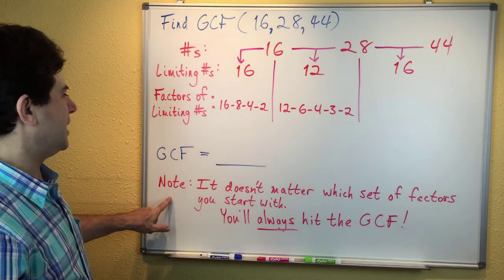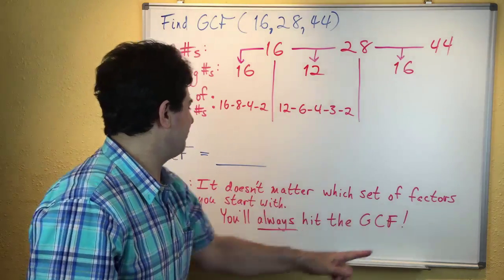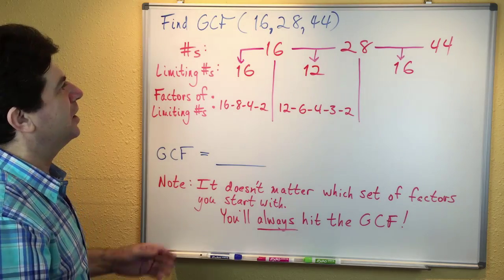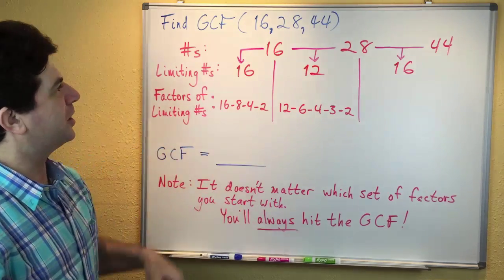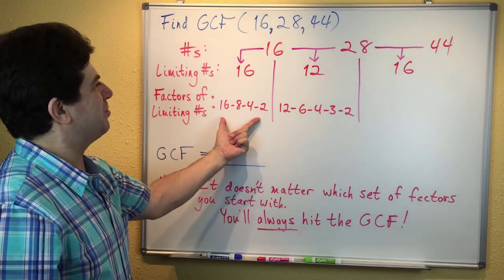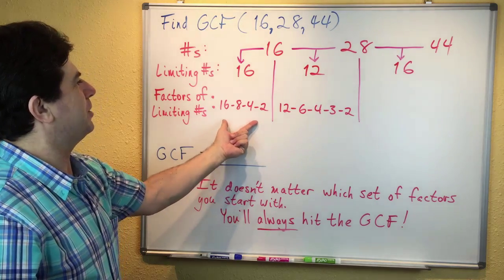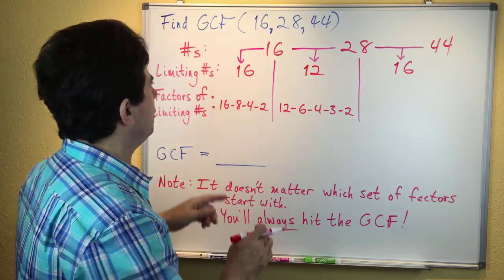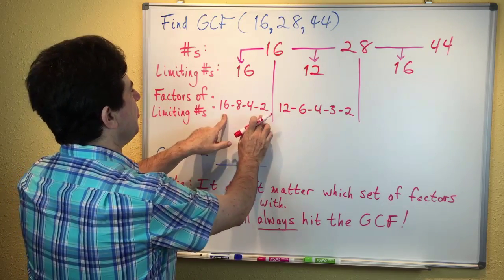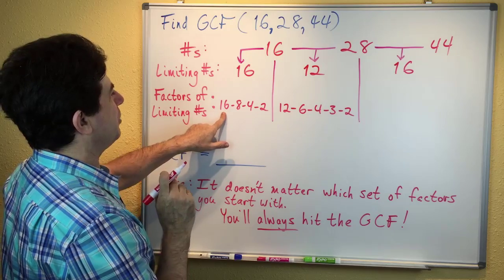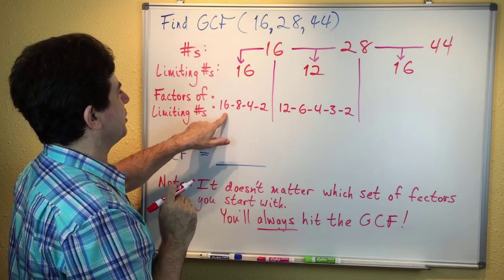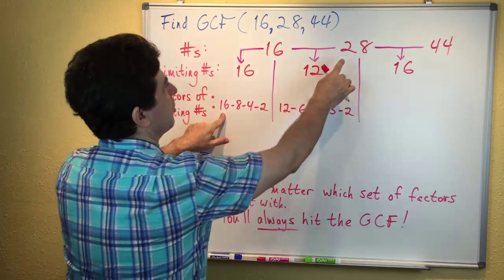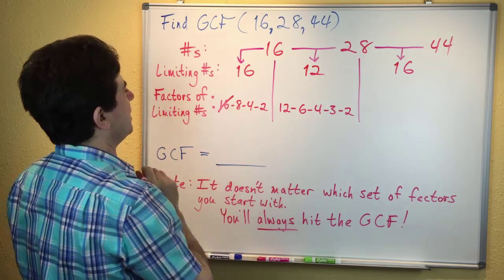It doesn't matter which set of factors you start with. You'll always hit the GCF. Since this is a smaller set of numbers, I'm going to start with these. We ask: does 16 go into 16? Yes. Does 16 go into 28? No. So forget 16. Then we try 8. Does 8 go into 16? Yes. Does 8 go into 28? No. 8's out.